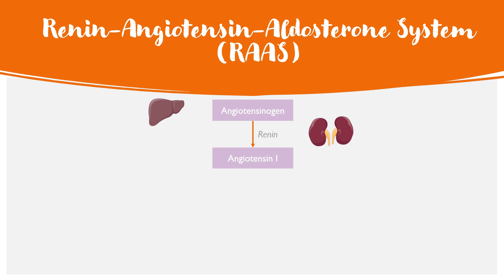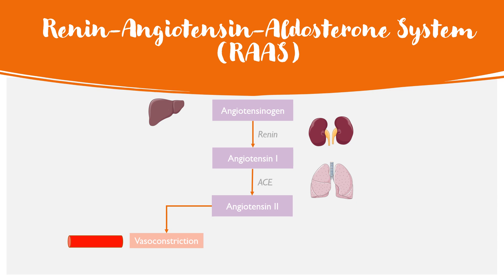Angiotensin 1 is then converted to angiotensin 2 via ACE, or angiotensin converting enzyme, produced by the lungs. Angiotensin 2 has multiple effects, but the two main ones are vasoconstriction — causing constriction of blood vessels to increase blood pressure — and triggering aldosterone production in the adrenal glands.